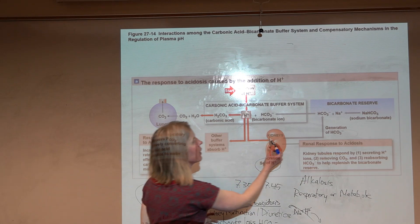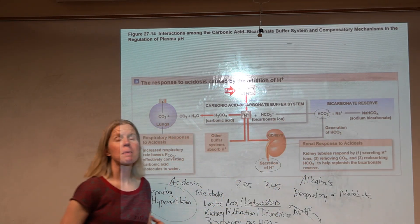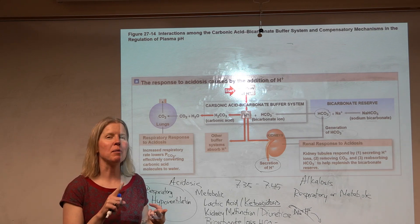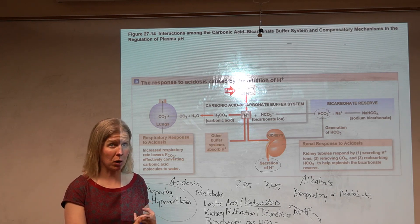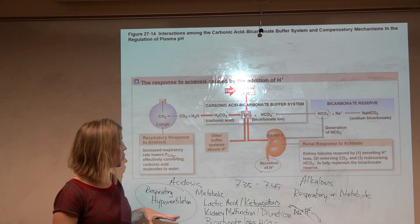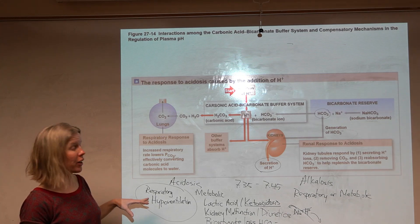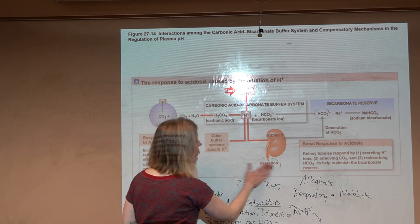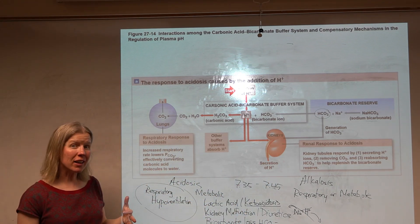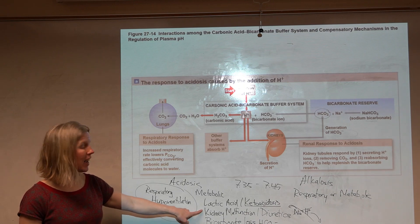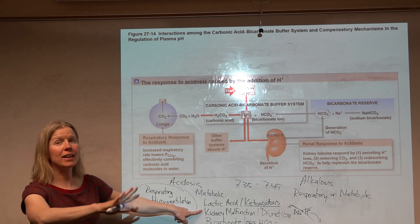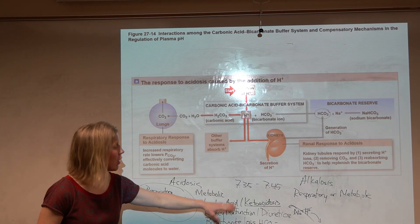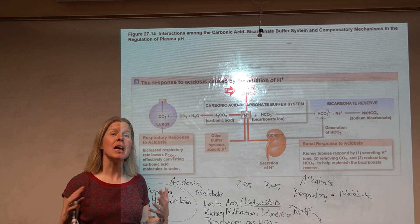We're reabsorbing bicarbonate. Here's our bicarbonate being generated, and so the kidney is going to do its best. The kidney is not as fast, the kidney can often not completely fix those problems. We are going to have to take care of the underlying reason - you're going to have to fix the ventilator in this case. When we're dealing with metabolic acidosis, if the kidney isn't functioning properly, the kidney can't fix it. That is going to rely completely on the lungs.